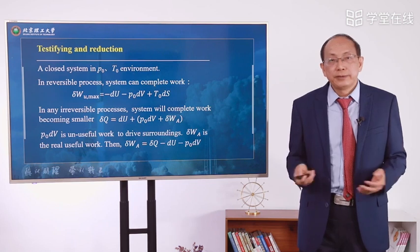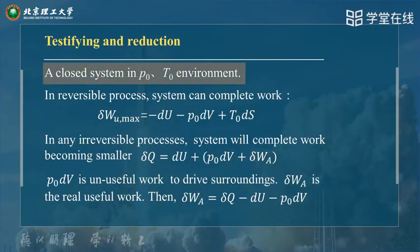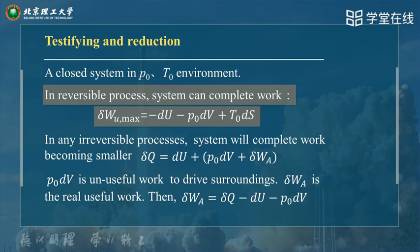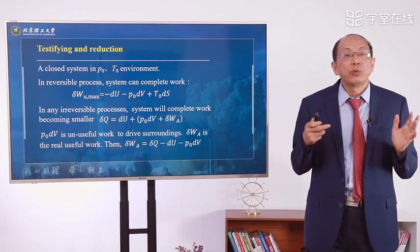To calculate work destruction: consider a closed system in P0, T0 environment. In a reversible process, the system can do maximum useful work, delta W maximum, which equals minus DU minus P0·DV plus T0·DS. From the last page, P0·DV is the non-useful work to drive the surroundings. Delta WA is the real useful work in the actual process.